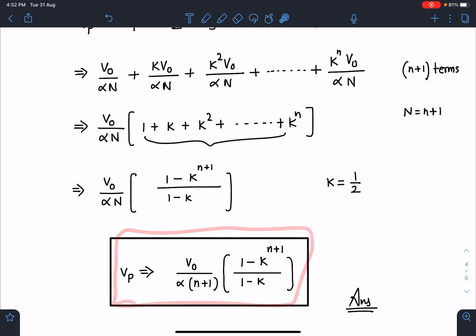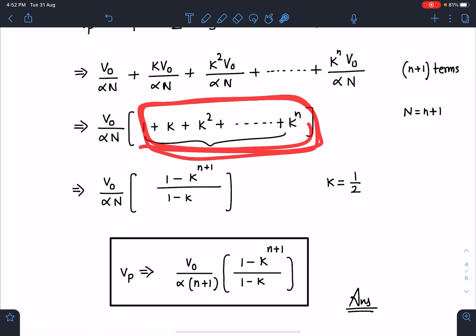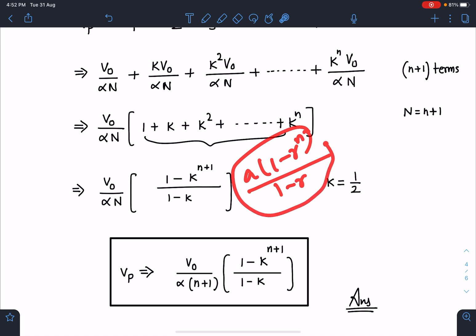If I substitute the value of n+1, this is going to be the potential at point P: V₀ by α(n+1) times (1 - k to the power n+1) by (1 - k). I just hope I have applied the correct formula, but I think I have given enough idea to you how to go ahead with this.